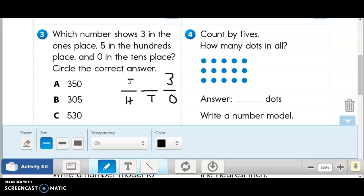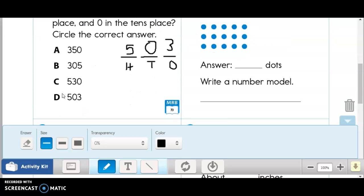Five in the hundreds place. Oh, hundreds is over here. They tried to fool us. They don't know how smart our second graders are. And zero in the tens place. Five hundred three. There's my correct answer, letter D.